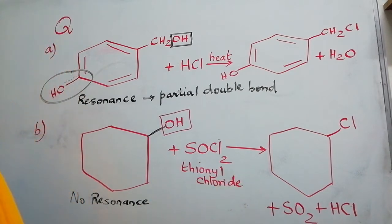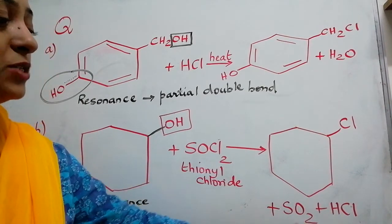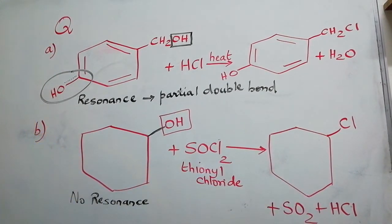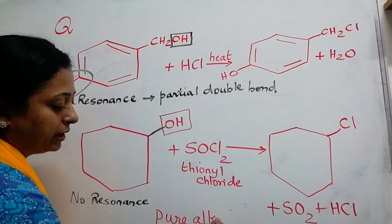I am trying to solve for you one more important topic in this question, that is why thionyl chloride reactions are preferred. The reason is the two escapable gases SO2 and HCl will escape from the reaction vessel. Therefore, we are able to get pure alkyl halides.